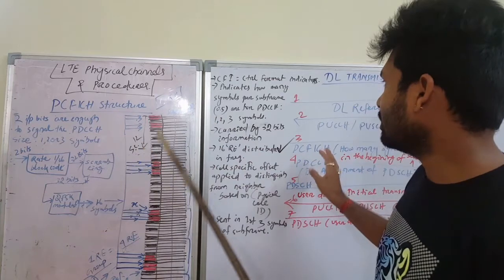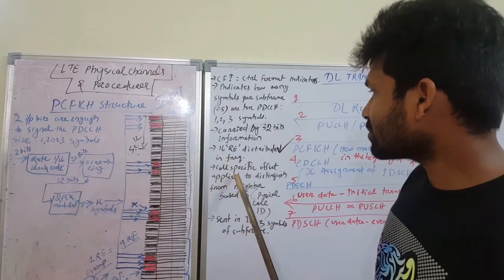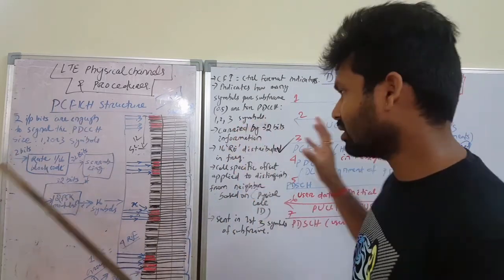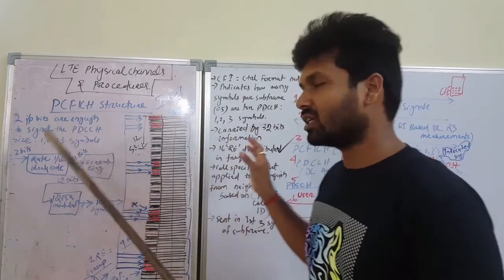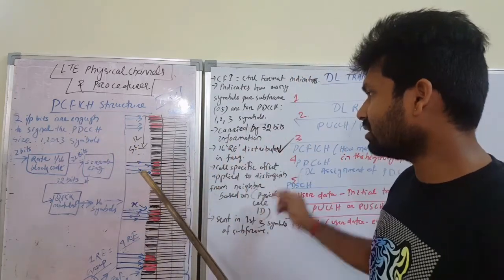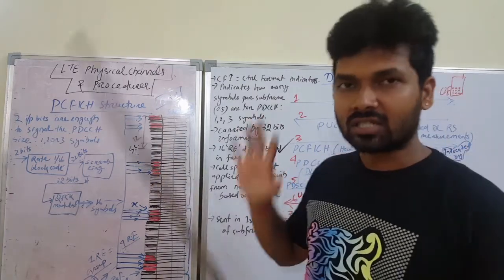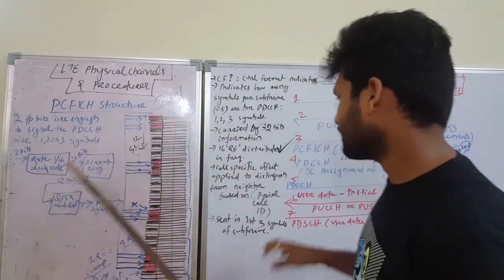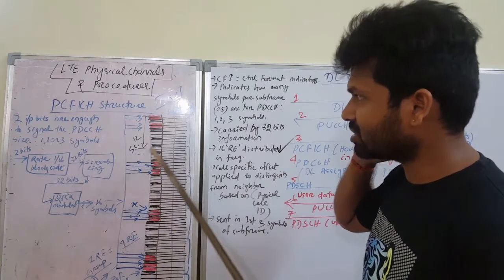PCFICH transmission. Cell-specific offset is applied to distinguish from neighboring cells - that means the physical cell ID. Based on the physical cell ID, we can have offsets for distinguishing between the neighbor cell and the serving cell. The last thing is it is sent in the first 3 symbols of the subframe.